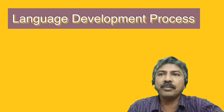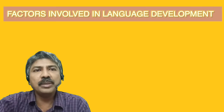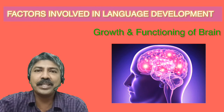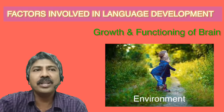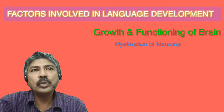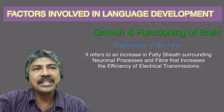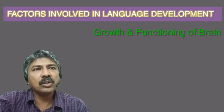When we look into the factors involved in language development, we strongly believe language development is governed by two main factors. The first is the brain, which involves capacity, ability to think, and to store and process information. The second is the environment, which gives the opportunity or reasons for thinking. As far as brain development is concerned, myelination of neurons with age refers to an increase in the fat shield surrounding neuronal processes and fibers that increases the efficiency in electrical transmissions. The second factor he mentions is dramatic changes in synaptic connections.